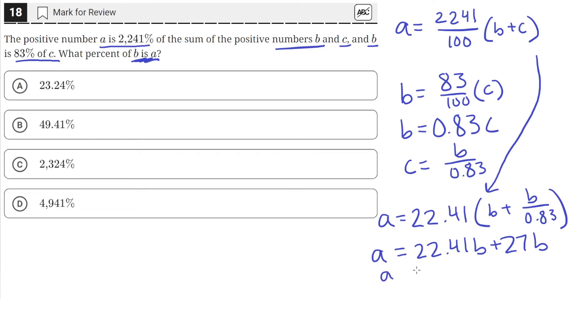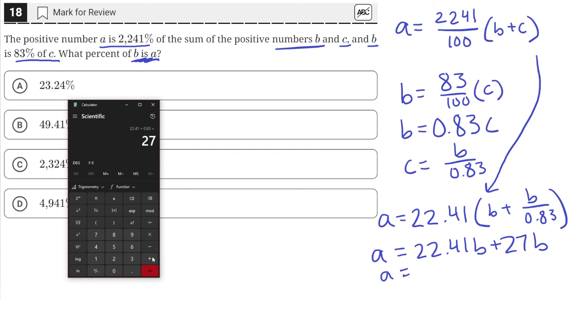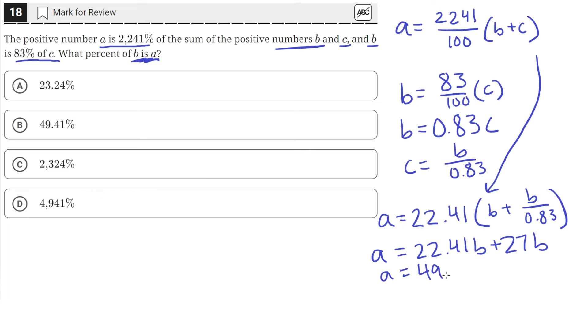So now let's combine those two together. So 27 plus 22.41, that's equal to 49.41B. So A is equal to 49.41B.